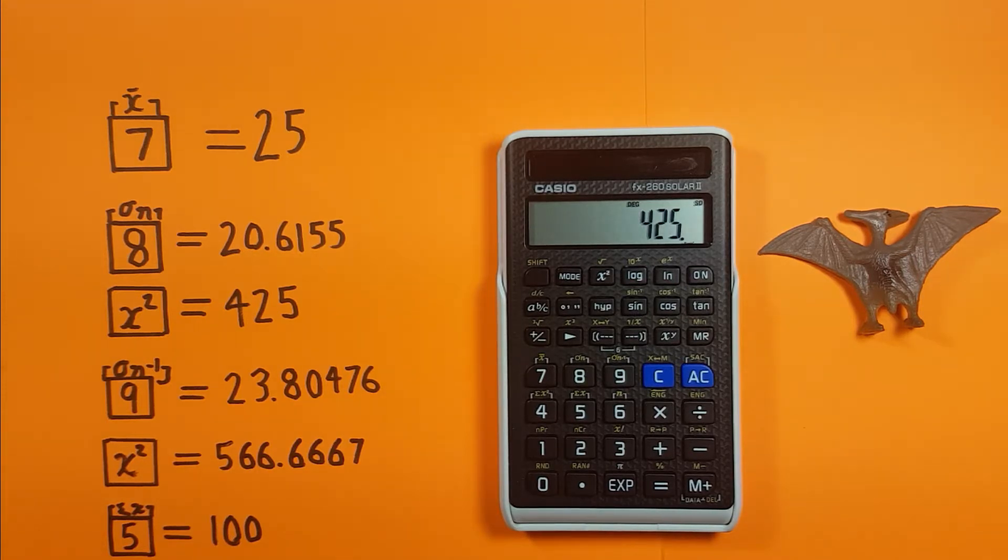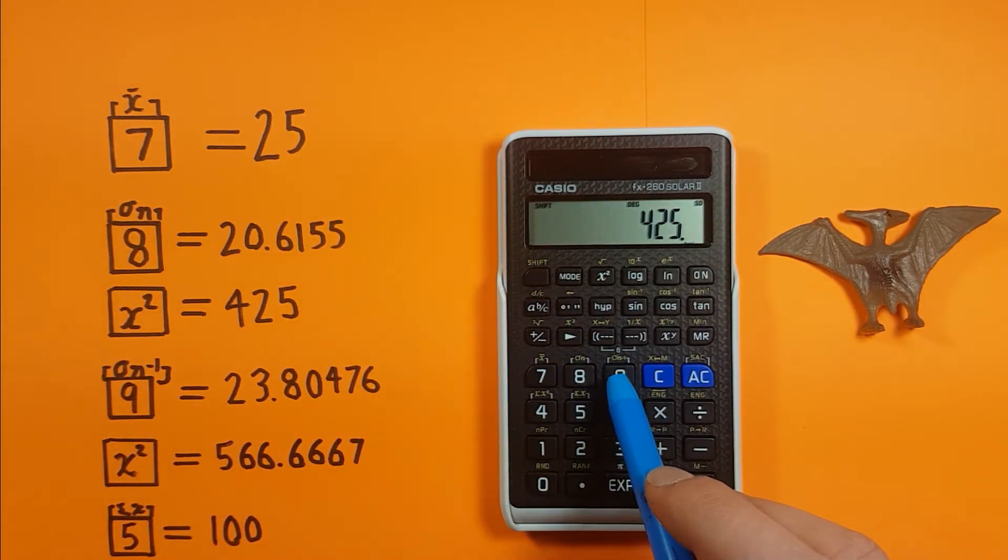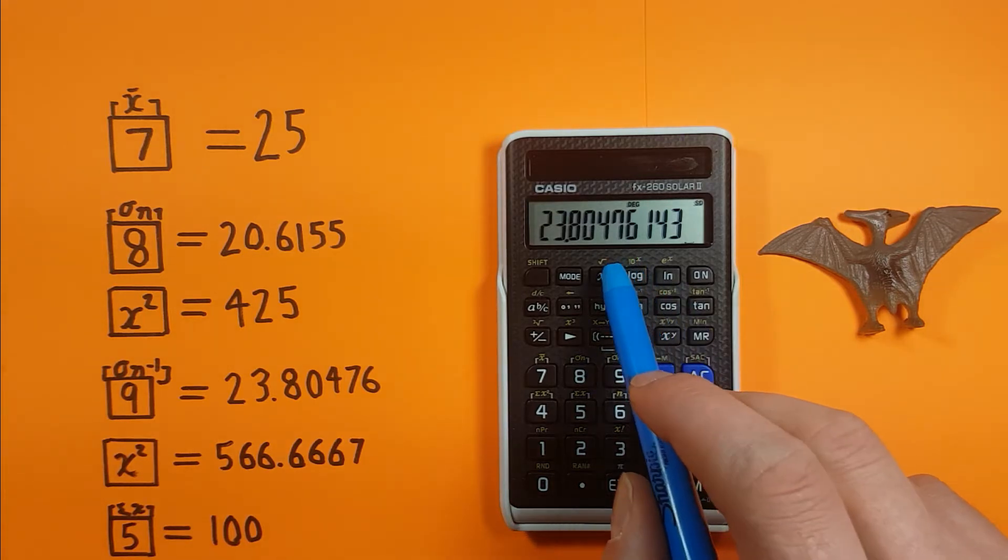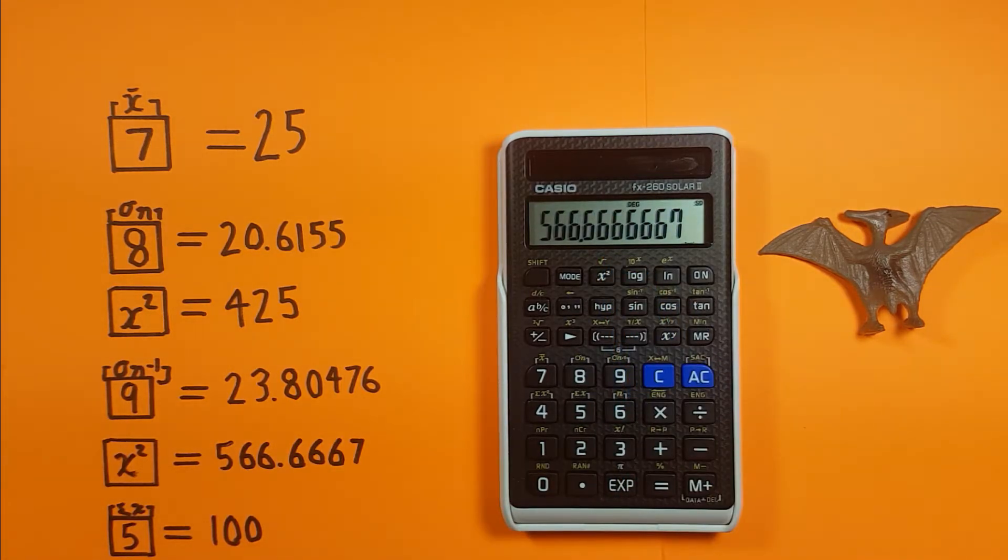We can do the sample standard deviation by pressing shift 9 which is the sigma n minus 1, and this gives us 23.80476 etc. And again if we want that variance we simply square it and get a variance of 566.6667 etc.